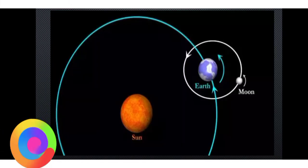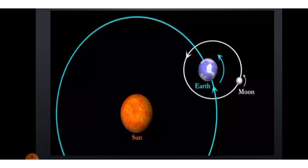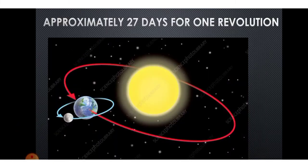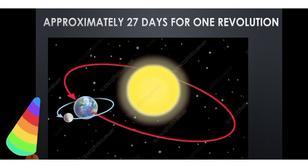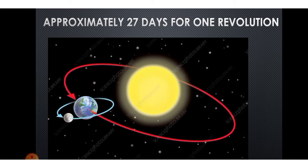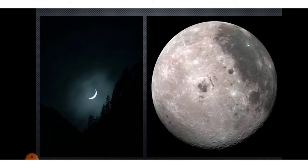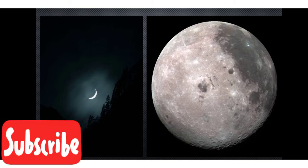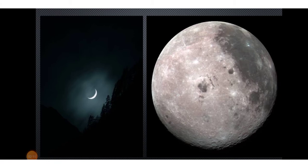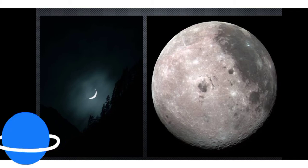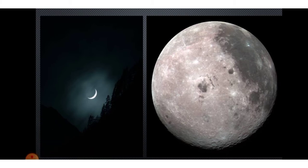As the earth is doing revolution and rotation, the moon is also doing revolution. It takes approximately 27 days for the moon to complete one revolution. The surface of the moon looks gray. It has mountains and plains covered with rock dust. A satellite means any heavenly object that revolves around a planet. So the moon is a satellite of the earth.